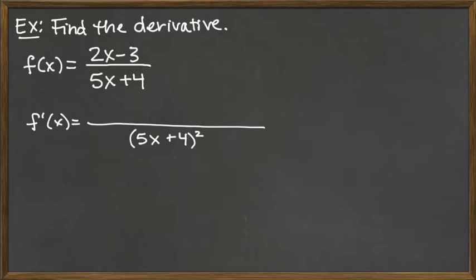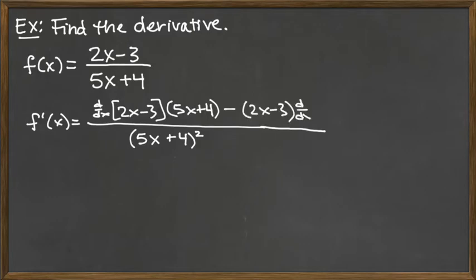So on the top, we've got the derivative of the top, which is the derivative of 2x minus 3 times the bottom, which is 5x plus 4. And then the quotient rule has a subtraction sign there. So from it, we subtract the top, which is 2x minus 3 times the derivative of the bottom. And the derivative of the bottom, we're talking the derivative of 5x plus 4.